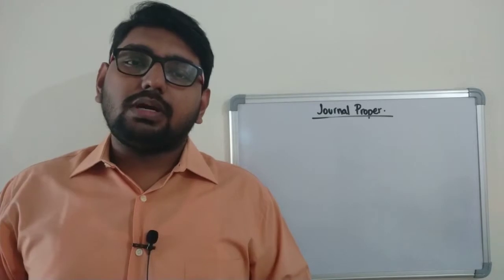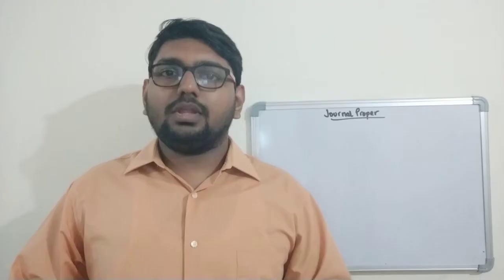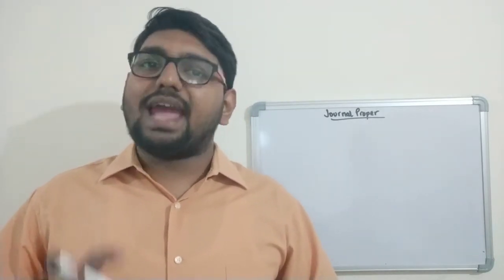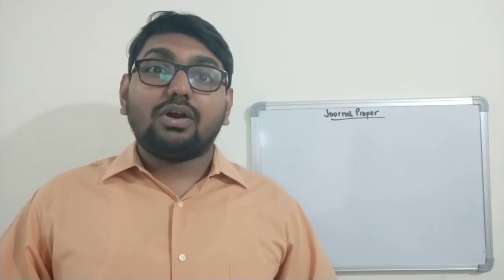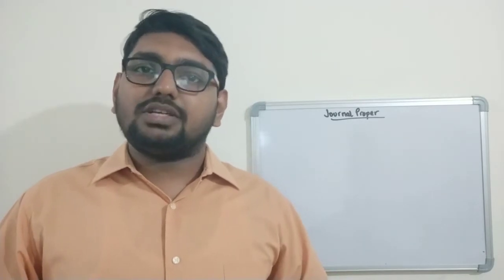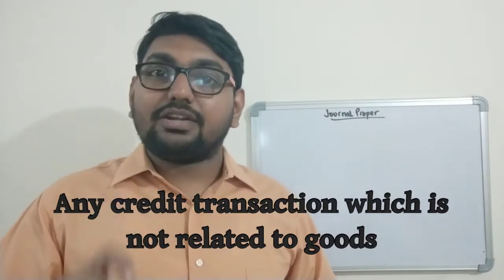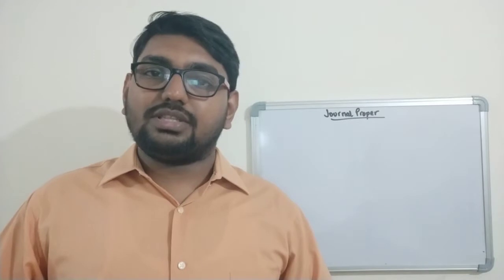In the last episode of subsidiary books, I am going to talk about journal proper. A journal proper is like the 'other' section of subsidiary books — all transactions which cannot be included into the cash book, purchase book, sales book, purchase return book, and sales return book are entered into the journal proper. In short, any credit transaction not related to goods will go into the journal proper.